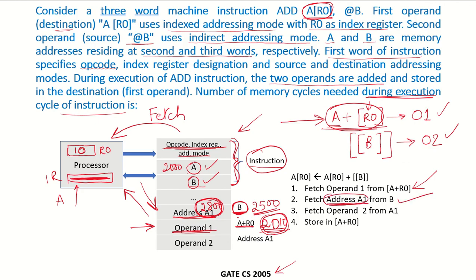Once we have address A1 in the processor, the processor sends that address out to fetch operand 2 — this is memory cycle 3. Now we have both operands in the processor: operand 1 from A+R0 and operand 2 from address A1. Both operands are added, and the result must be stored in the destination, which is again A+R0. Storing the result back requires another memory cycle, making the total number of memory cycles required equal to 4.